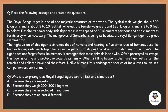Moving to the next question — a reading comprehension question. I recommend trying it by pausing the video. The key point is how you approach it. Many people start reading from the very first line and reach the last before reading the actual question — that is a waste of time. Instead, use the 'hunter approach': read the question first, never the given data. The question asks: why is it surprising that Royal Bengal tigers can run fast and climb trees?